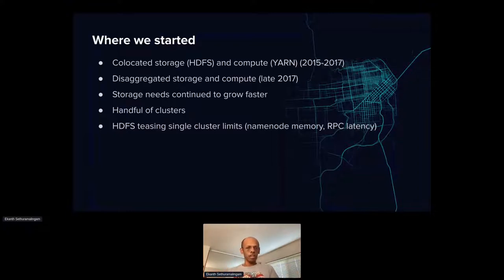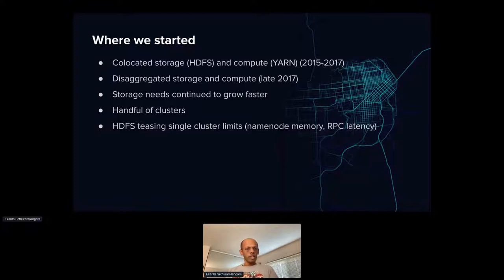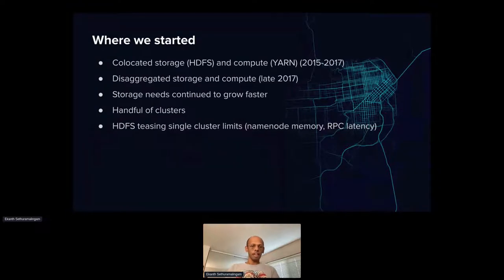After disaggregation, we could separately monitor storage space utilization and IO utilization and push cost efficiency further. We also had specific use cases requiring stricter SLAs, so we separated them into dedicated clusters — HBase was one of those. We introduced ViewFS to manage multiple clusters from the client side. We were also hitting single-cluster limits, with namenode memory footprint approaching JVM limits and RPC latency limits on our largest cluster, pushing us to scale out.